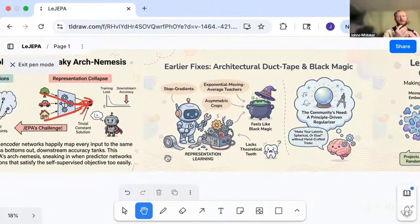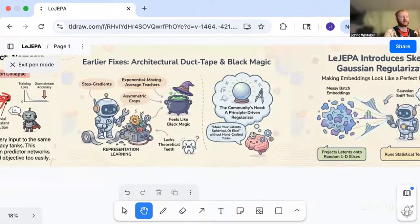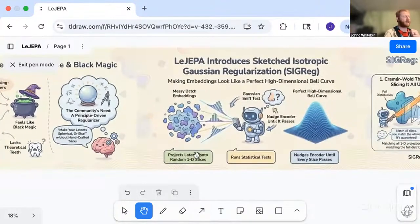Things like exponential moving averages where you have two slightly different versions of the encoder, one of which is lagging behind the other and being updated with regular averaging. There's been all of these extra attempts at regularization and stop gradients and duct tape fixes. But it's been in practice fairly tricky to tame these models and to get them to actually learn the kinds of useful representations that we're hoping for.